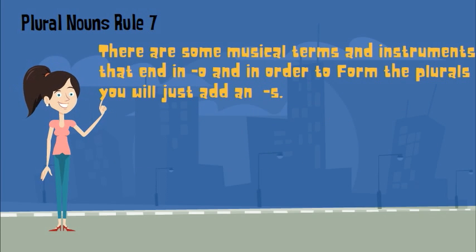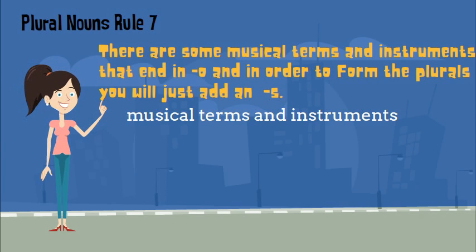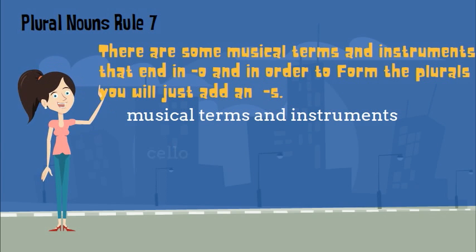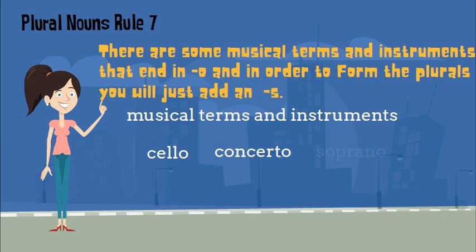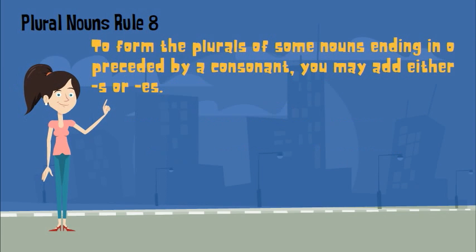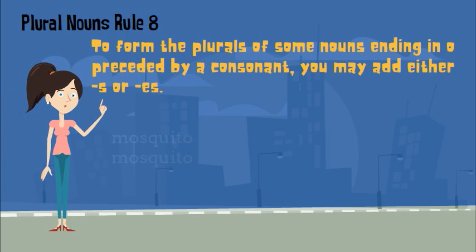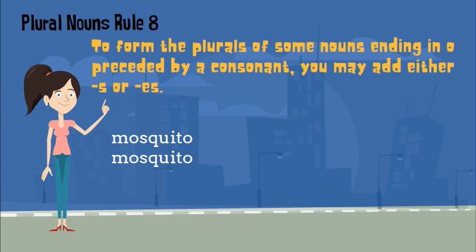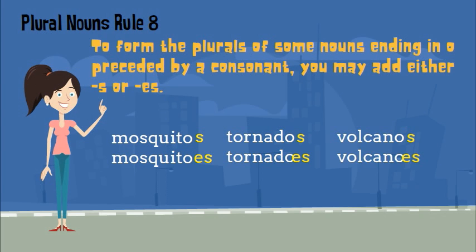Additionally, there are some musical terms and instruments that end in O, and to form the plurals you would just add an S — for example, cello, concerto, soprano. To form the plurals of some nouns ending in O preceded by a consonant, you may add either S or ES. Here are some examples: mosquito can be spelled with an S or ES at the end, and the same applies to tornado and volcano.